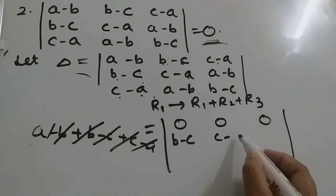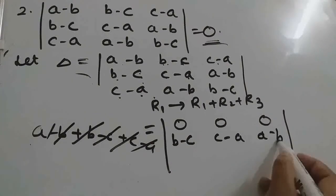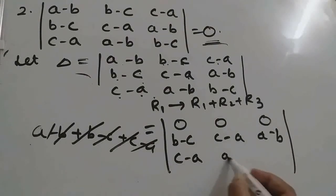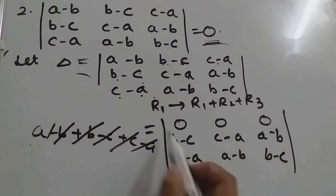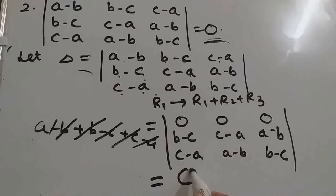And R2, R3 will remain same. But what will happen to this determinant value? Since we got one complete row as 0, so answer for this determinant will be 0. So we have proved that delta is 0. This determinant is 0.